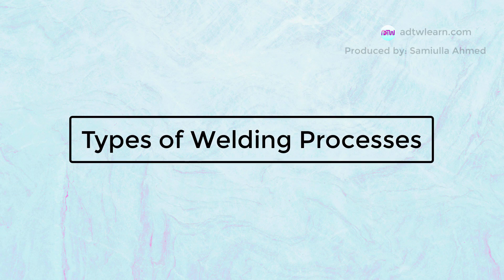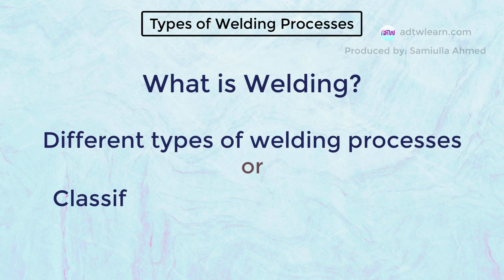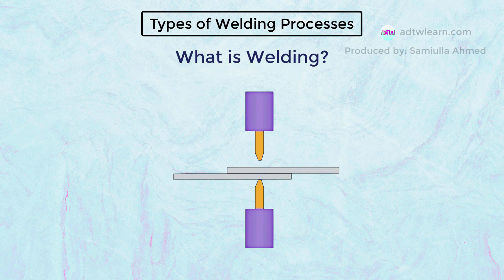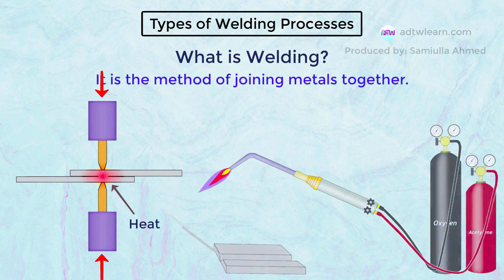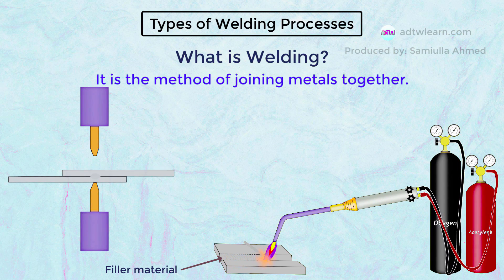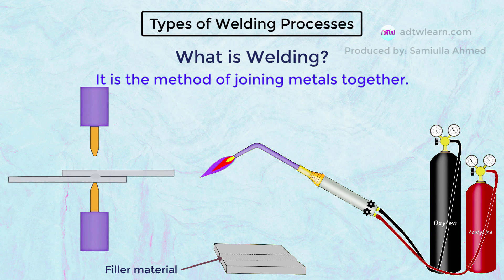In this video we will learn what is welding and the different types of welding processes. Whenever we want to join two metals together we use welding — in short, it is the method of joining metals together. This joining of metal is permanent. During the welding process we make use of heat; in some cases both heat and pressure are used. We can also make use of filler material, whose function is to fill the gap between the two metals being joined. The use of filler material depends on the situation.